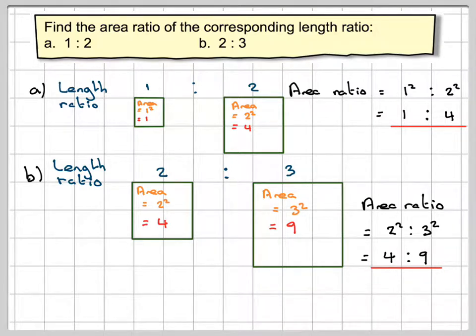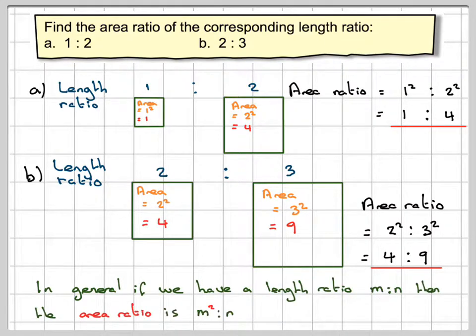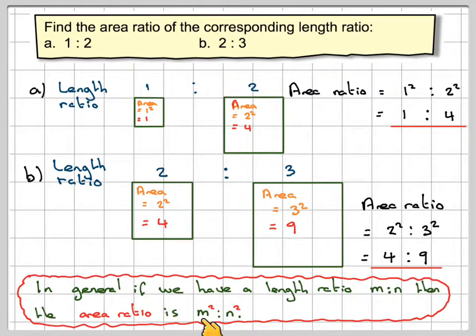So we've established a general rule here. In general if we have a length ratio of m to n then the area ratio will be m squared to n squared.